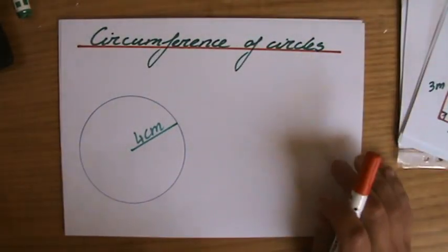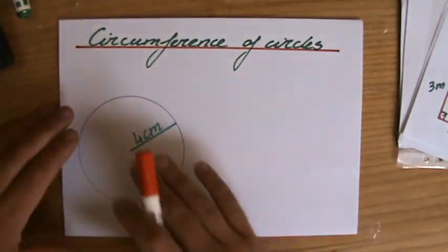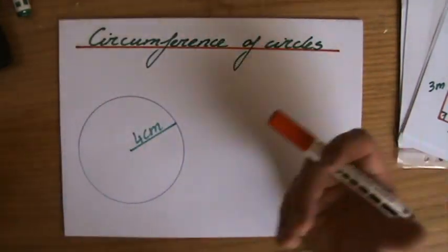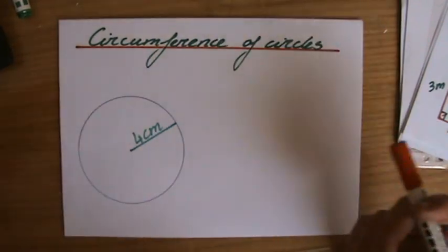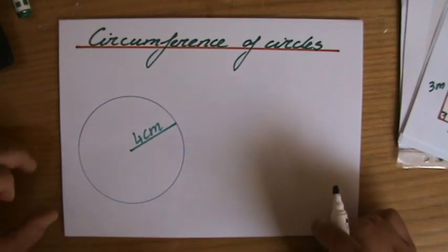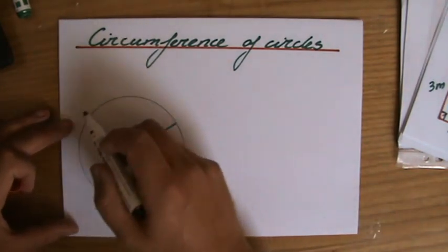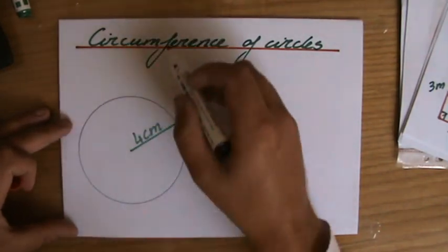We learn best when we try some questions. We've spoken about the circumference of circles and a formula. We spoke about pi, radius, diameter, everything. Now the question is, what is the circumference of this circle? The circumference is the perimeter, but when we talk about perimeters and circles, we say circumference.